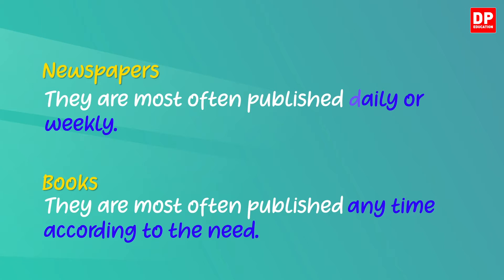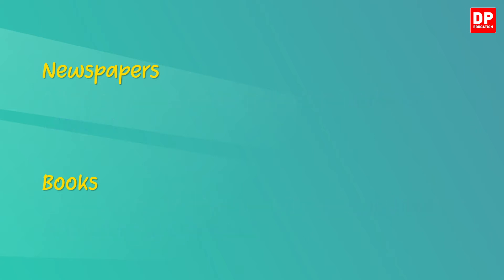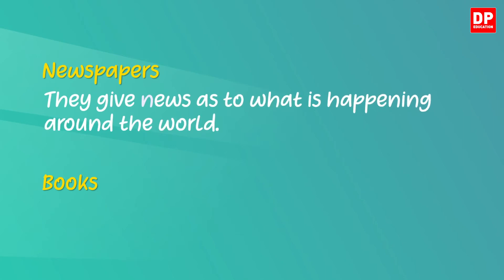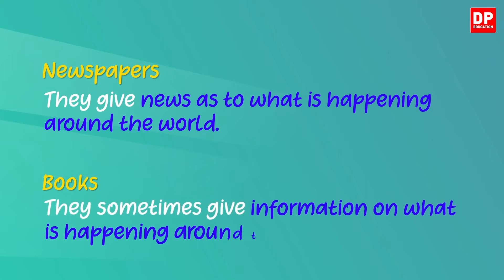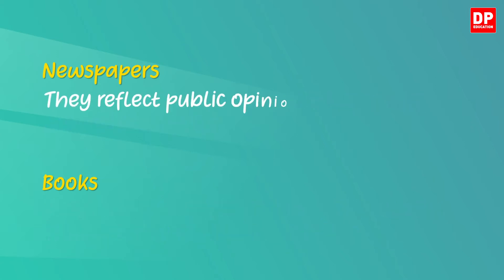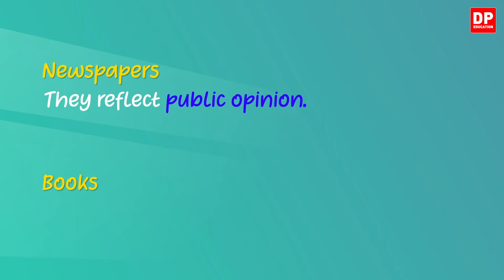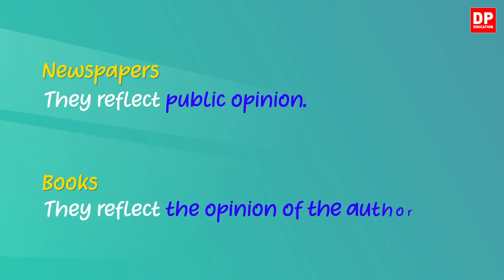In the first sentence 'they' refers to newspapers, but in the second one 'they' refers to books. Now the next sentence: 'They gave news as to what is happening around the world.' For books, you have to write: 'They sometimes give information on what is happening around the society.' Now the next one: 'They reflect public opinion' — that is about the newspapers. What about the books? 'They reflect the opinion of the author.'